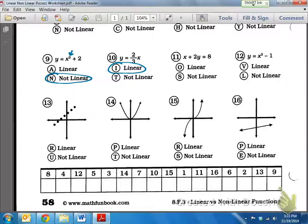So, for number 13, don't be fooled. Even though it's a bunch of dots, if I were to connect all the dots, do I have a line? Yes, I do. So, it is linear. On number 14, notice that it kind of, like, bends or curves a little bit. So, this would be an example of a not linear equation.